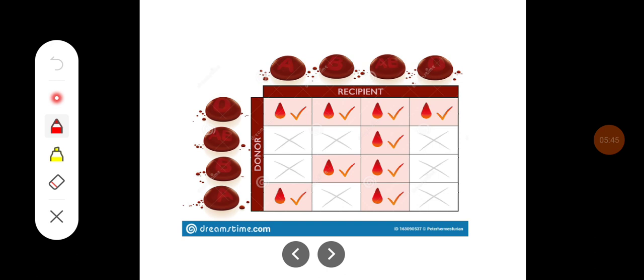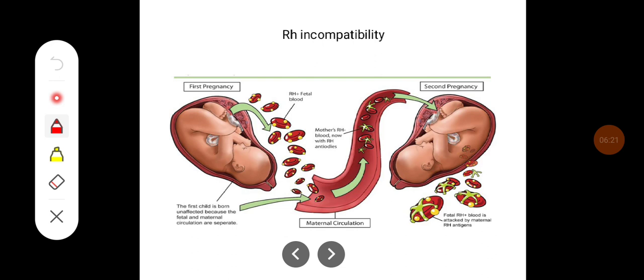Normally during blood transfusion, the O blood group can donate blood to all other blood groups — A, B, AB, or O — and is therefore called the universal donor. The AB blood group is called the universal recipient, as it can receive blood from O, AB, B, or A.